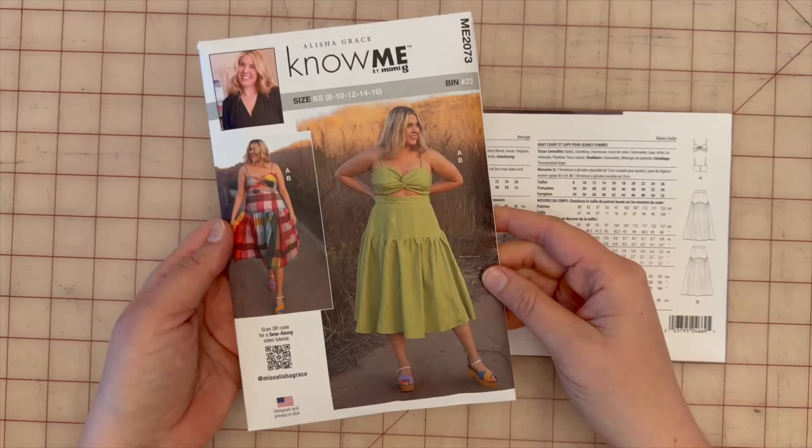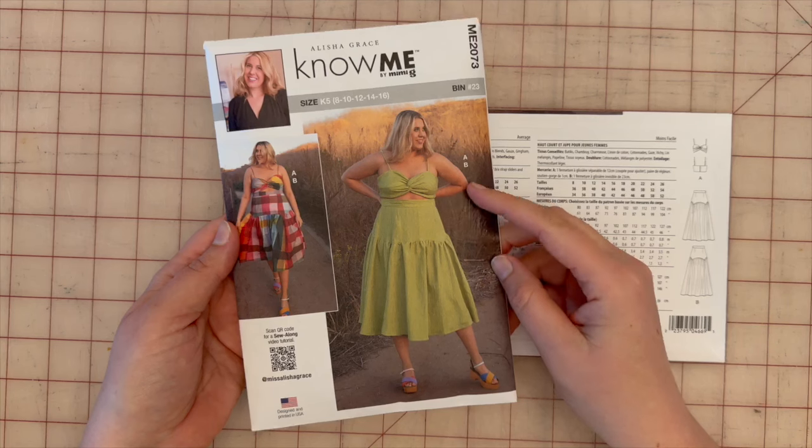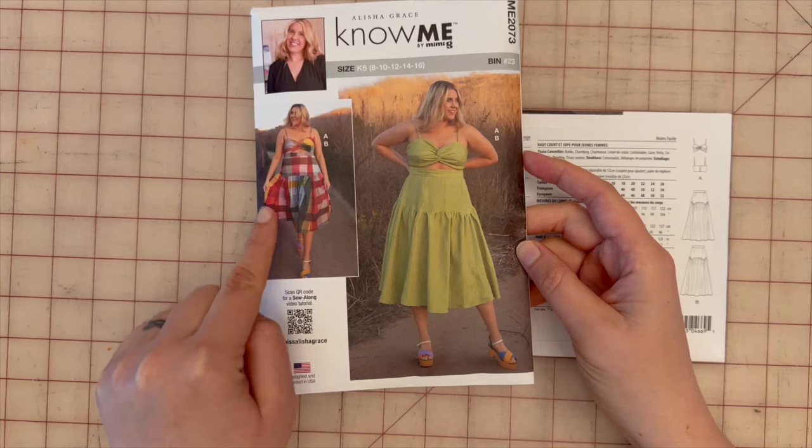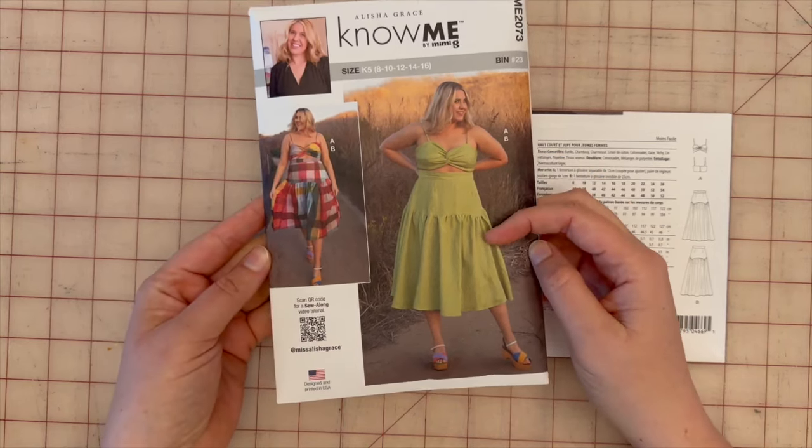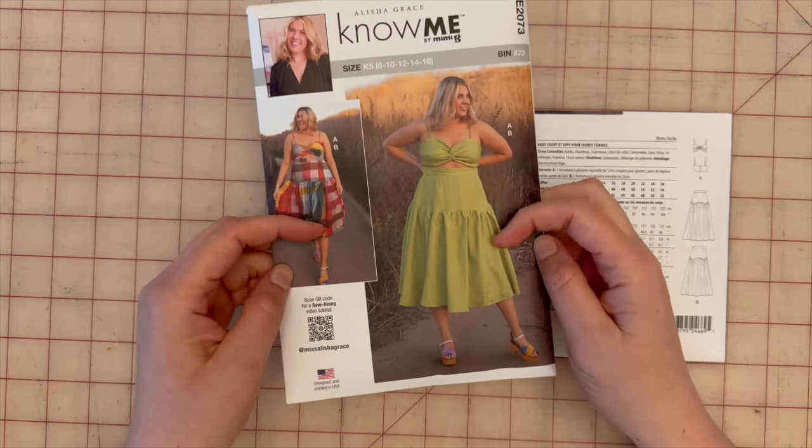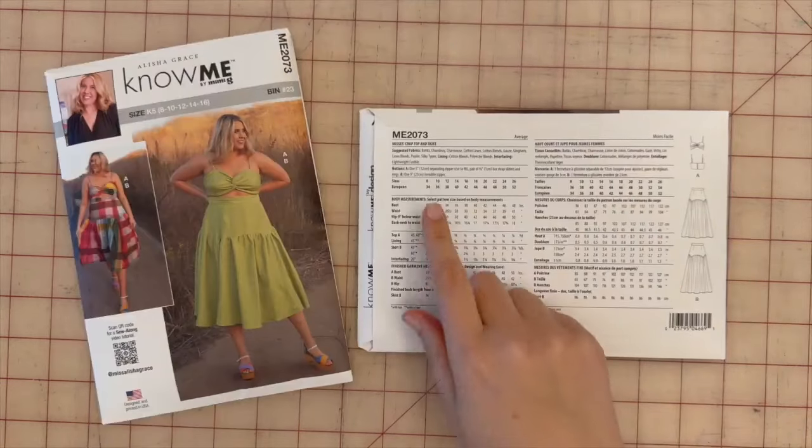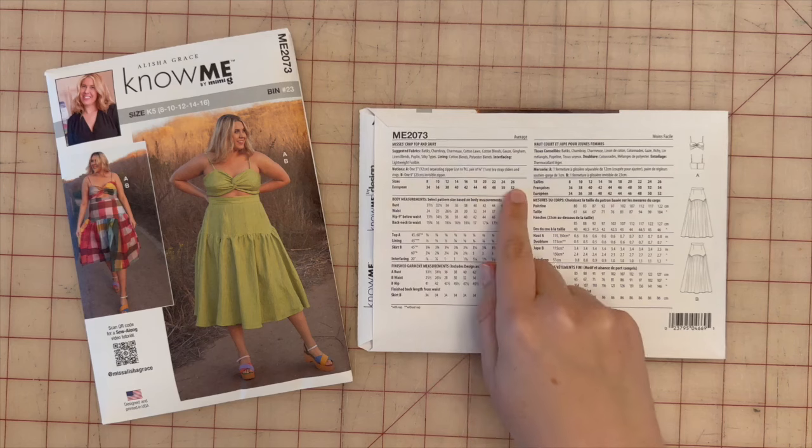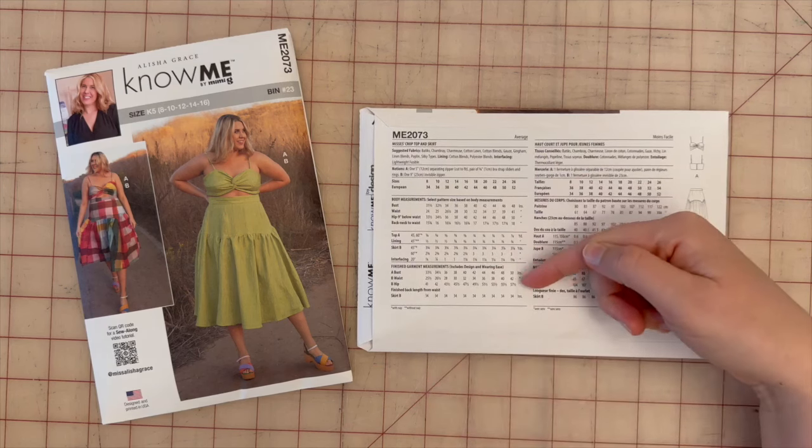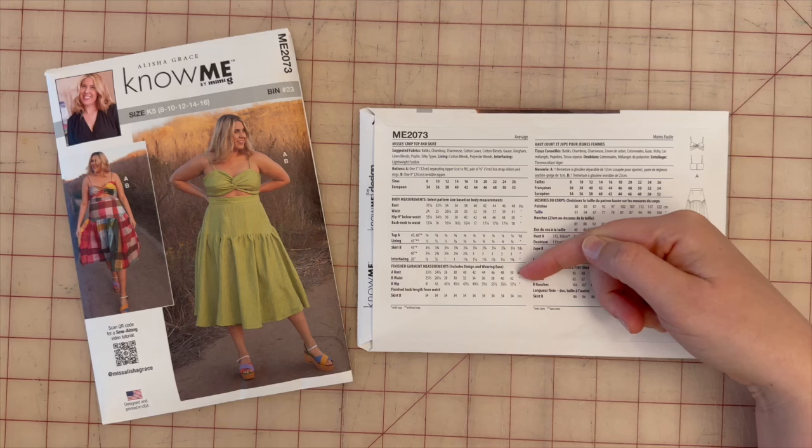ME2073. View A is the top and view B is the bottom. There's no variety between these two fabrics except to show it in a plain versus a printed look. The tops are the same, the skirts are the same, nothing's changed. This pattern comes in sizes 8 through 26. You can find all of your body measurements and finished garment measurements here on the back side of the pattern.